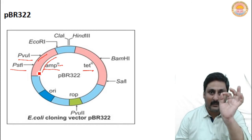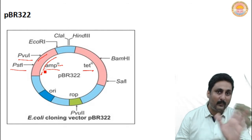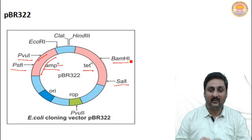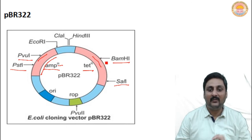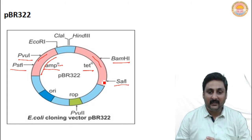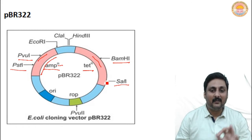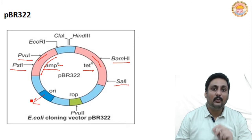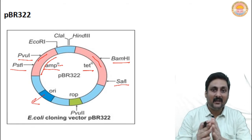Wherever the restriction enzyme acts, it opens the vector from that site. The tetracycline resistant gene region is also recognized. There is also an origin of replication — certain nucleotides are present in the DNA where opening of DNA takes place.